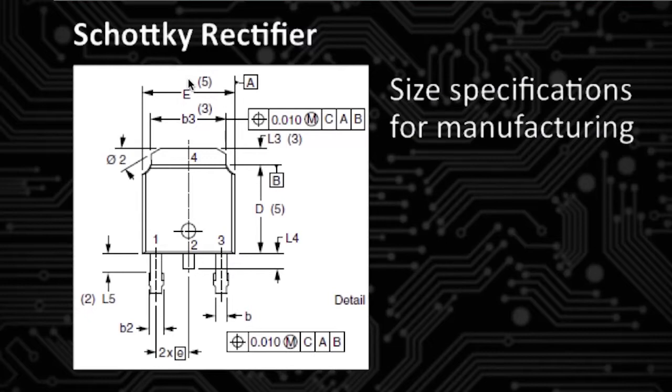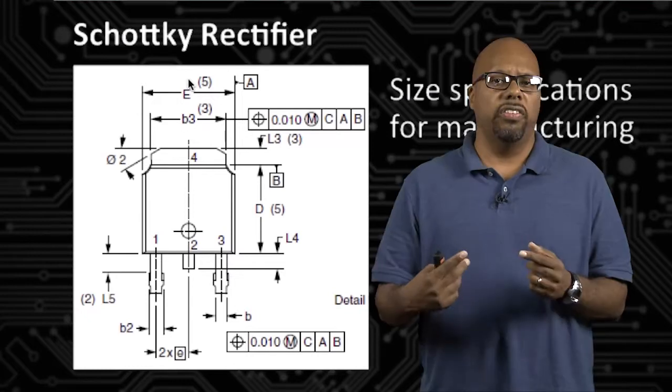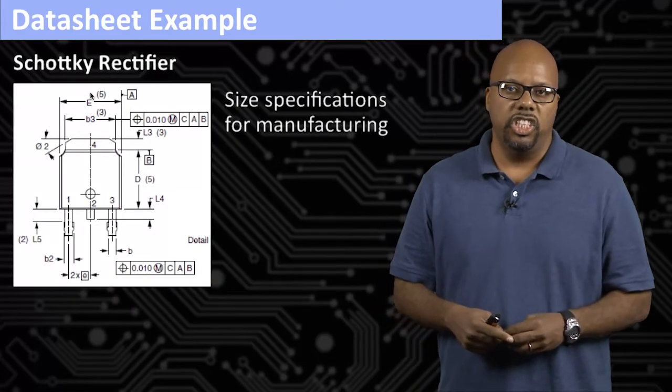And actually right there, you can't see all the numbers there. They label them with letters but there's a table next to it that shows what the sizes are. This is a typical thing that you'll find inside a datasheet.